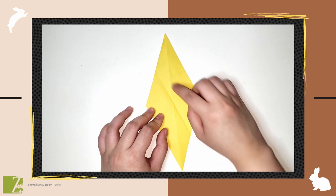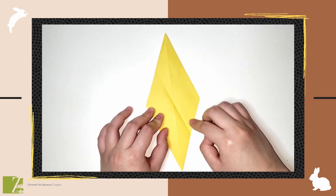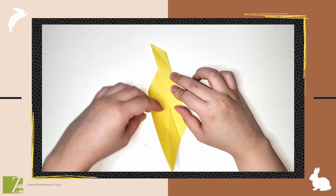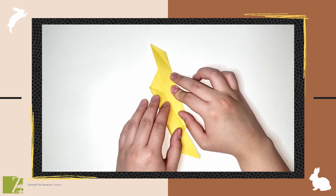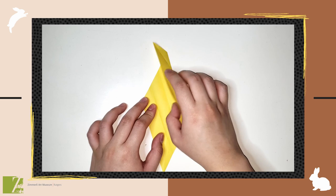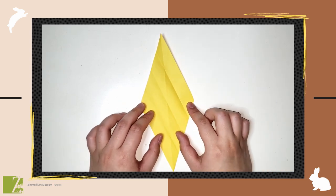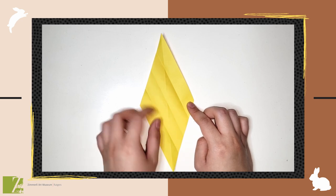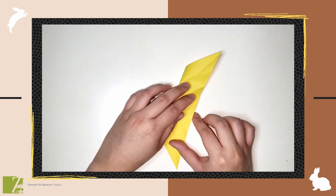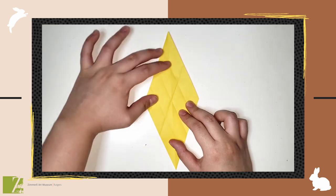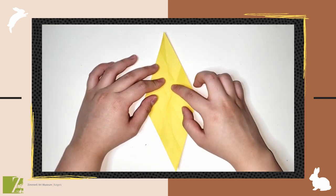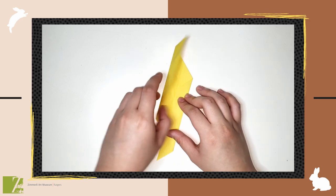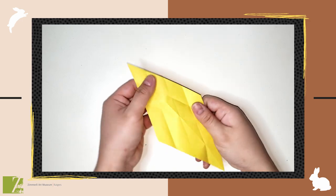Unfold and fold both the top and bottom outside edges to the middle crease we've created. Unfold again and now we're going to repeat the same steps with the other sides. Fold the top left outside edge to the bottom right outside edge. With that middle crease, fold both outside edges to the middle. Unfold and now we have many diamonds within the diamond shape.